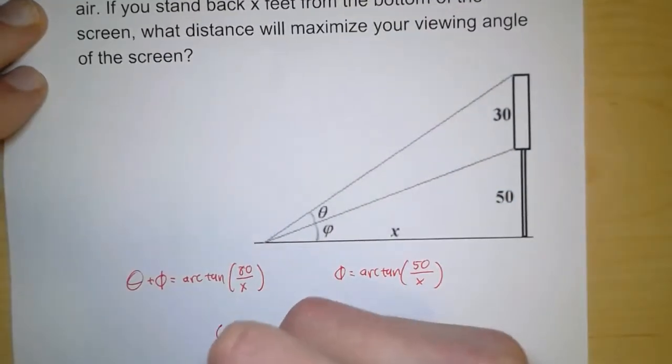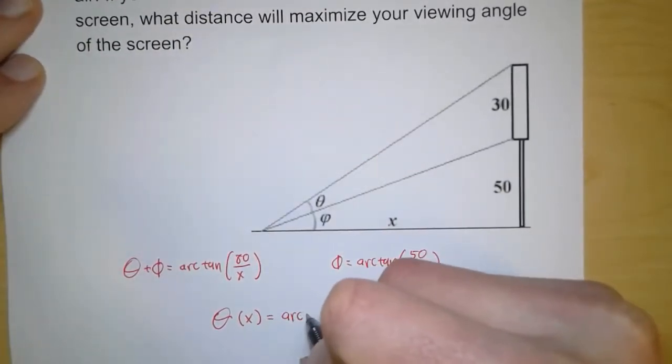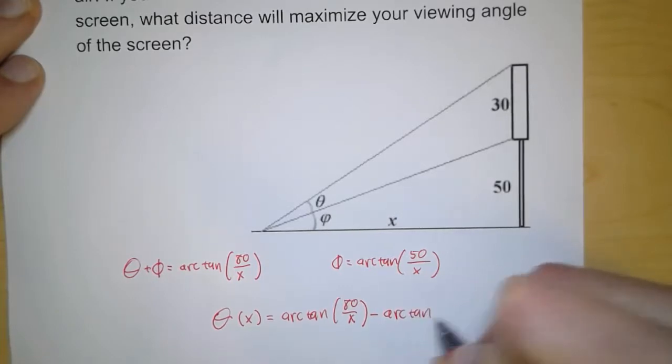And so the angle theta is actually a function of x. I'm going to write it theta of x equals arc tan of 80 over x minus arc tan of 50 over x.